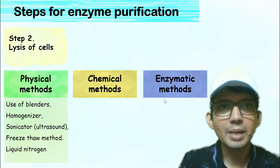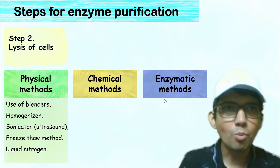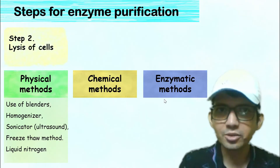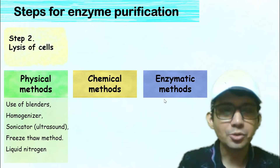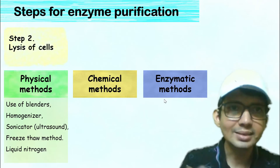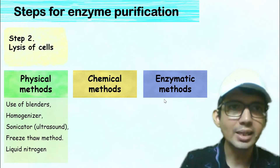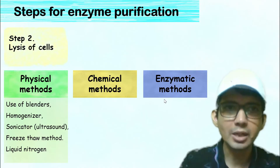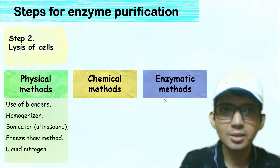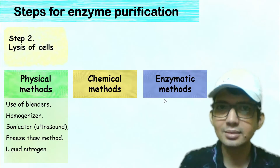The physical method involves the use of a blender, homogenizer, and sonicator, which uses ultrasound to lyse the cells. Besides these, the freeze-thaw method and grinding the sample in liquid nitrogen are also preferred for cell lysis.